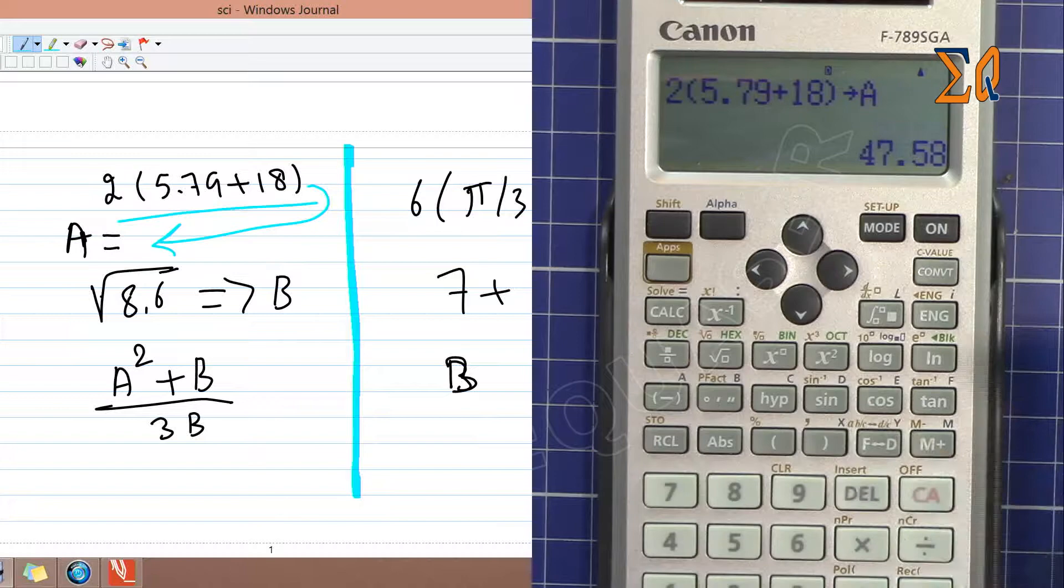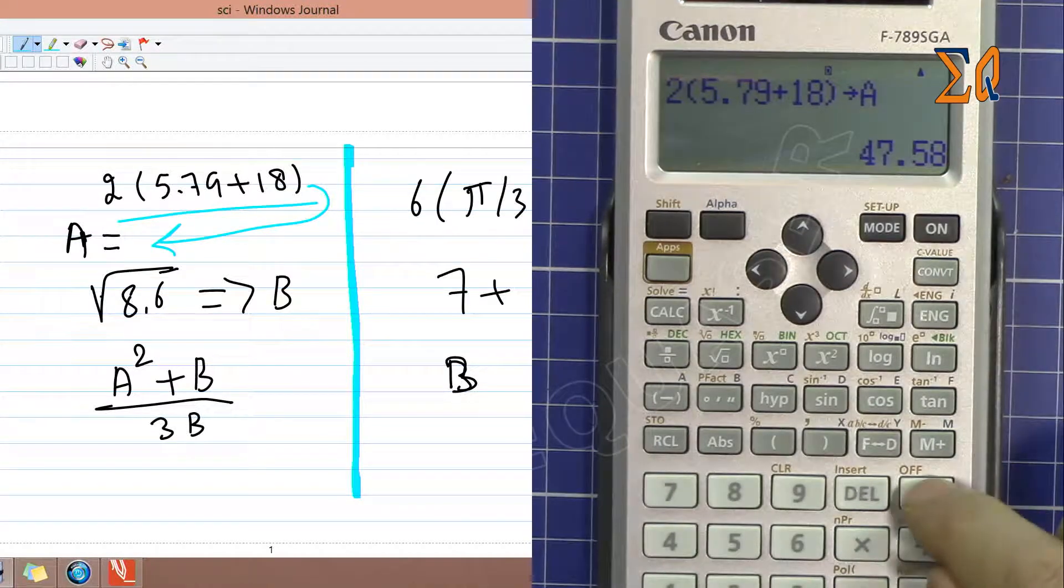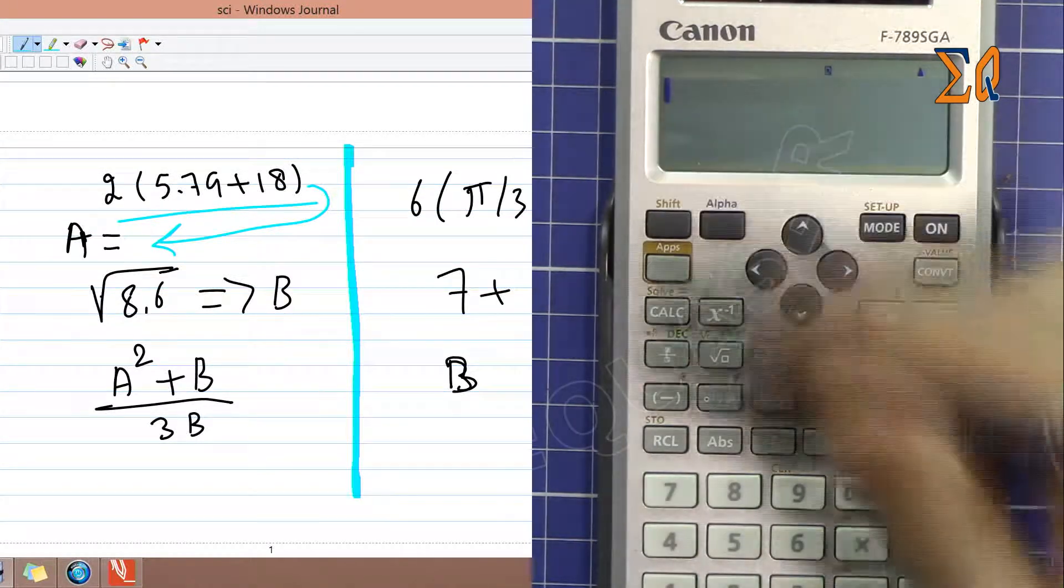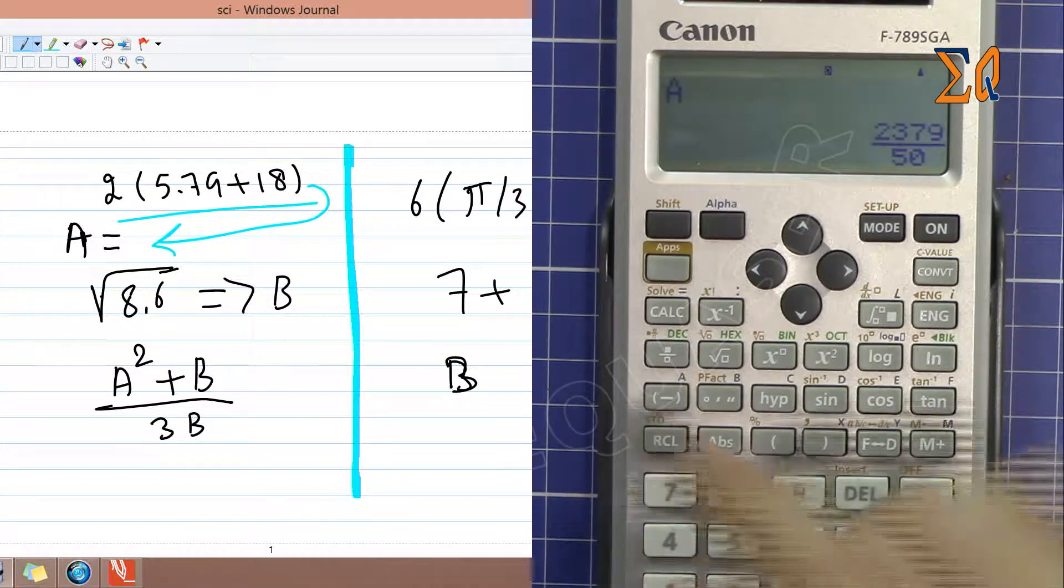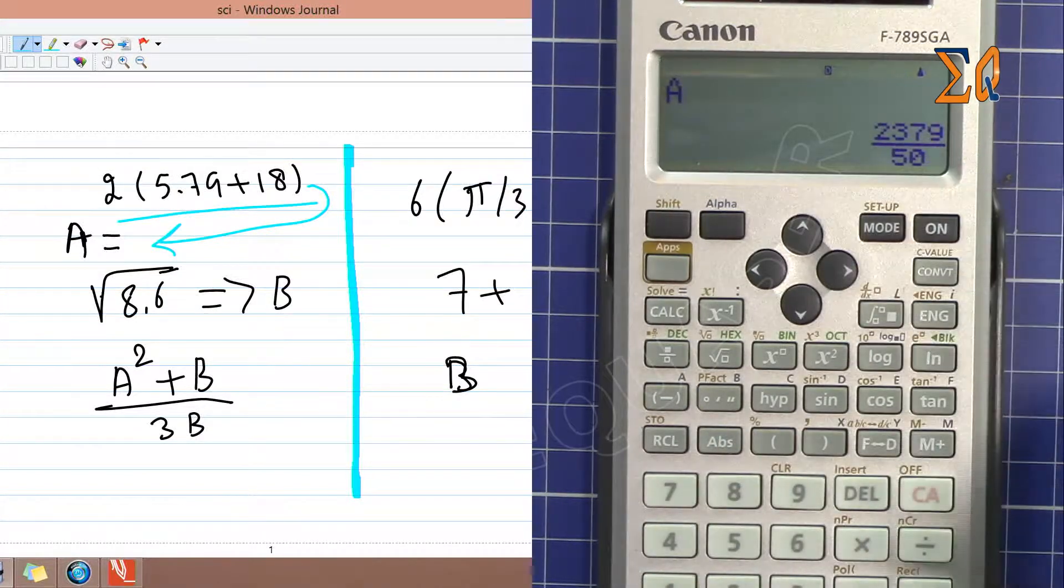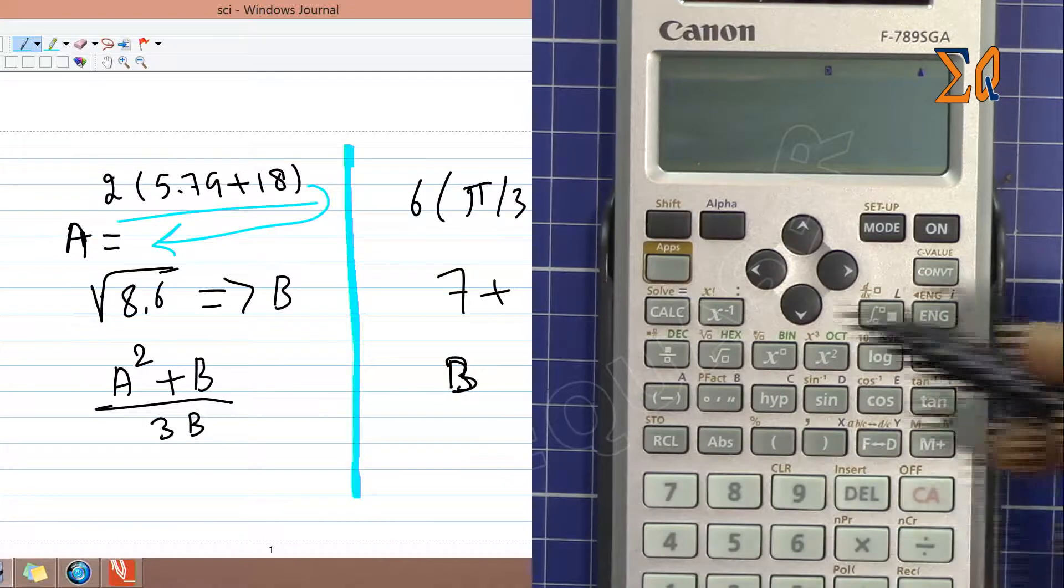I press clear all. If you want to get A back, just press recall A and the value will be displayed. So don't worry, the value is already in memory.